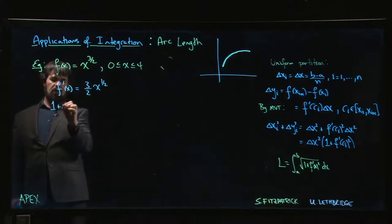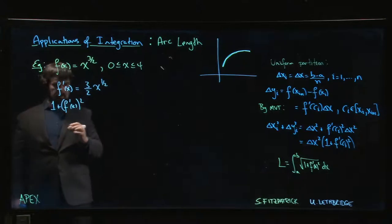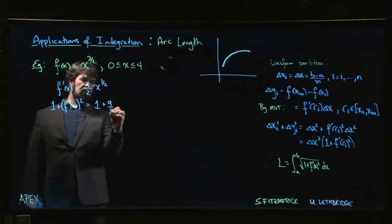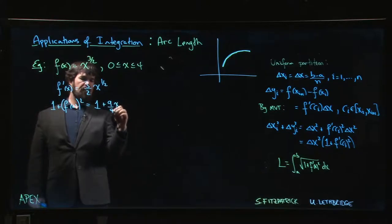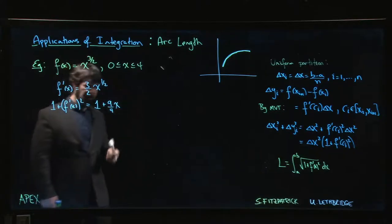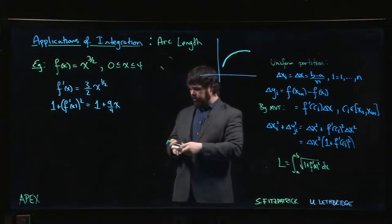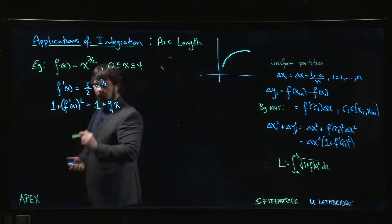1 plus f prime of x squared, well that's 1 plus 9 over 4 times x. Square the square root, we just get x. And this is not so bad as something to have under a square root because it's linear. We know how to do linear substitutions - linear substitutions are simple.